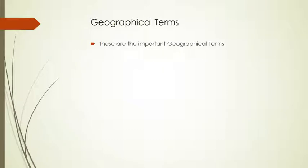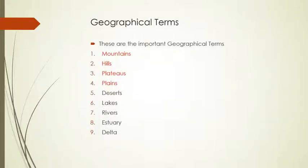What does it mean by geographical terms? Geographical terms can be defined as the alternative names of physical features. There are important geographical terms: mountains, hills, plateaus, plains, deserts, lakes,